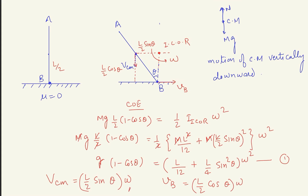You can calculate any velocity using omega from equation 1. Put in the value of theta for any particular angle to get the answer. If asked when end A hits the bottom, theta equals 90 degrees at that moment — just substitute theta = 90°. I think you have understood how to solve such problems using ICOR — it is always simpler and easier. Enjoy your day!